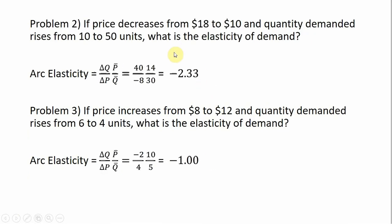For another example, if price decreases from $18 to $10, the change in P is minus 8. As a result, people buy more because of the lower price — quantity goes up by 40 units, so the change in Q is 40. The average price is the midpoint of 18 and 10, which is 14 — that's why this is sometimes called the midpoint formula. The average quantity, the midpoint between 10 and 50, is 30.